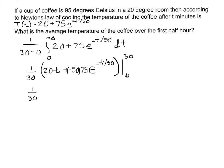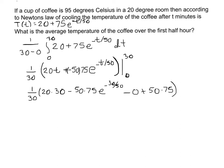I still have my 1 over 30 out in front. Plugging in 30: 20 times 30, plus — putting the minus sign in — minus 50 times 75 times e to the negative 30 over 50. Then plugging in 0: when I plug in 0 into the first term I get 0, and then minus, because it's a negative quantity from that negative 50, I end up getting 50 times 75. And e to the 0 is 1.